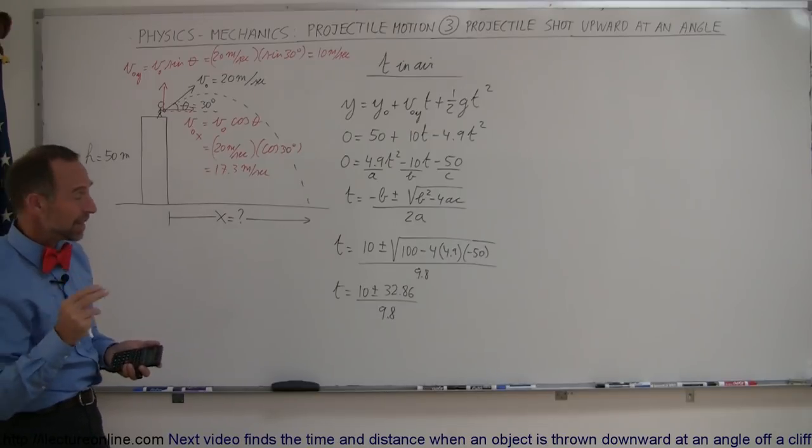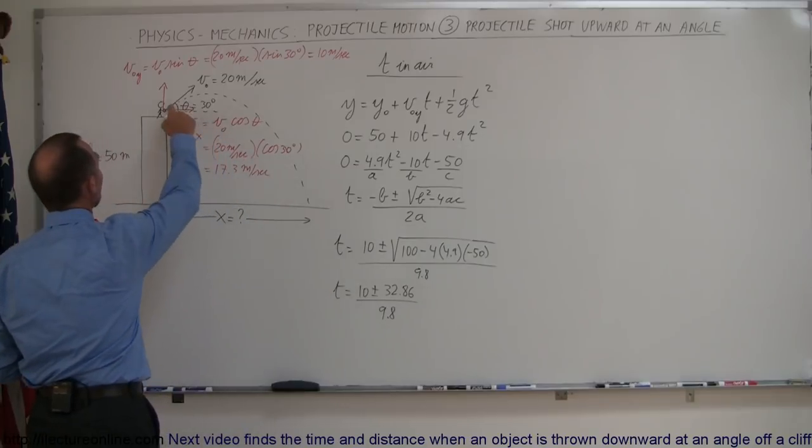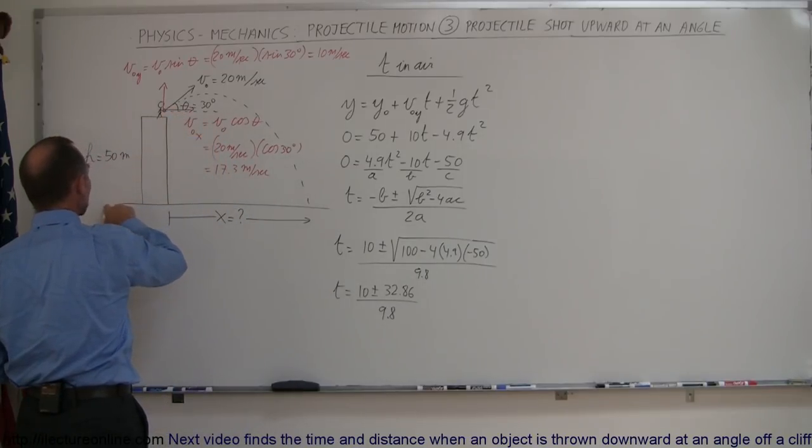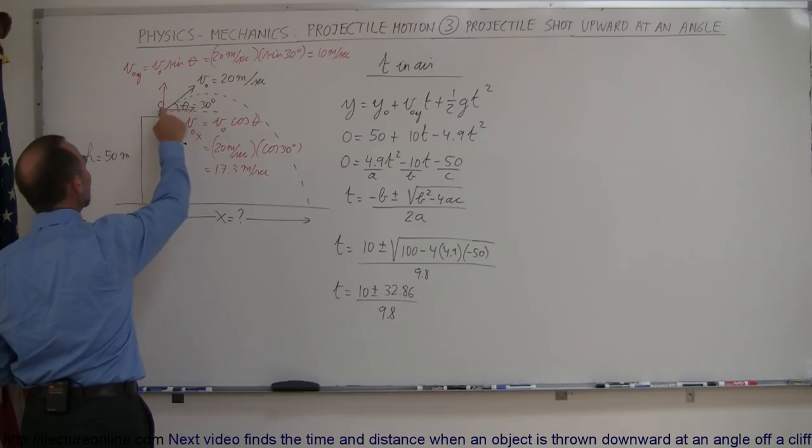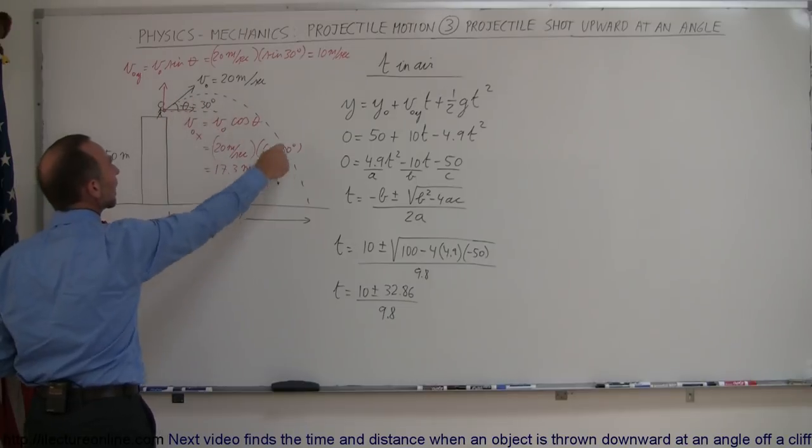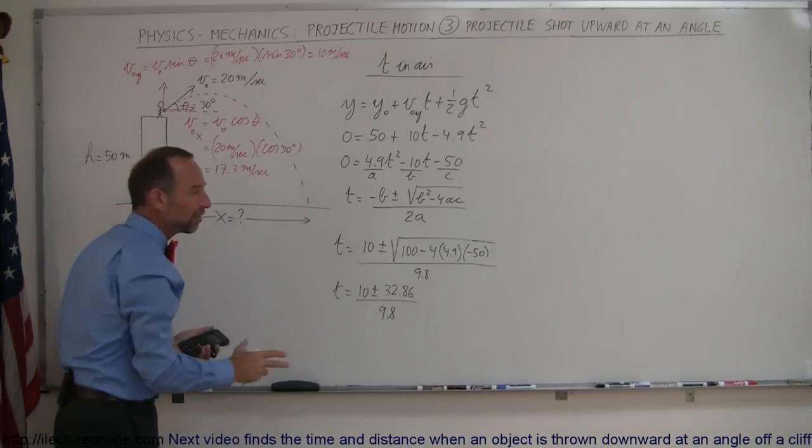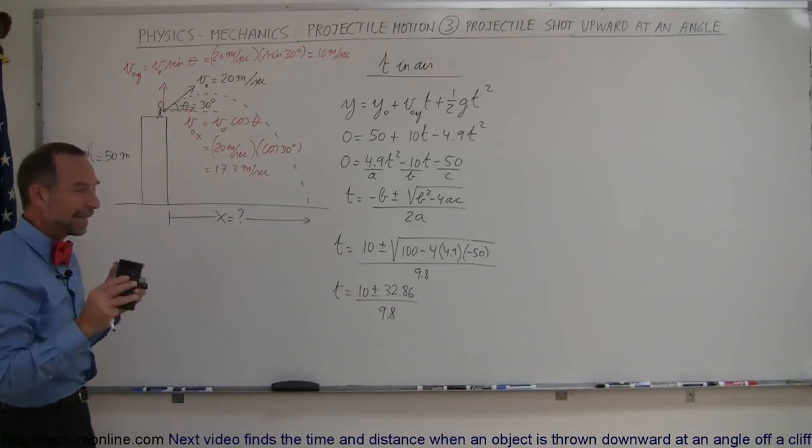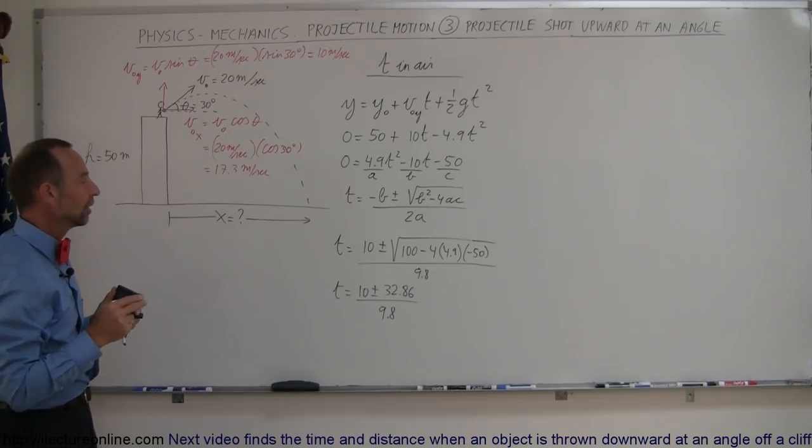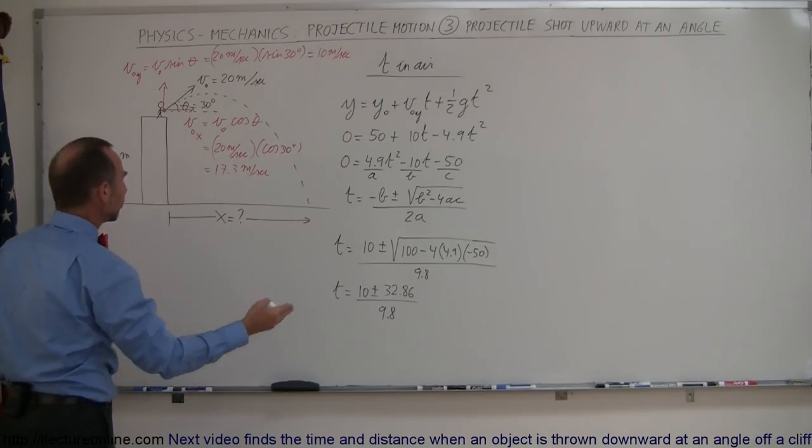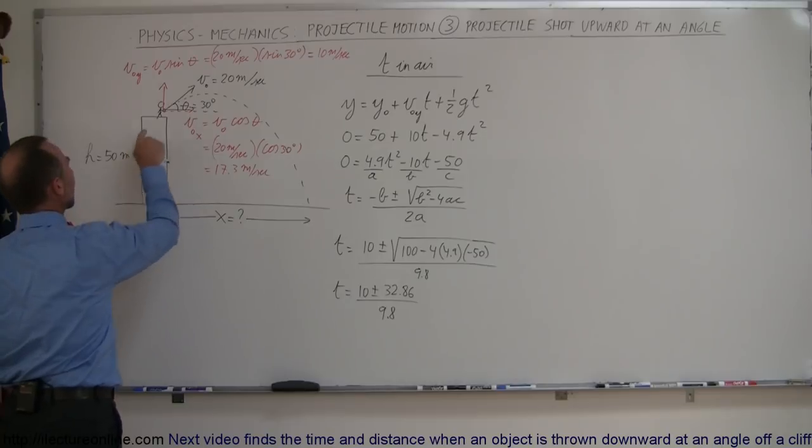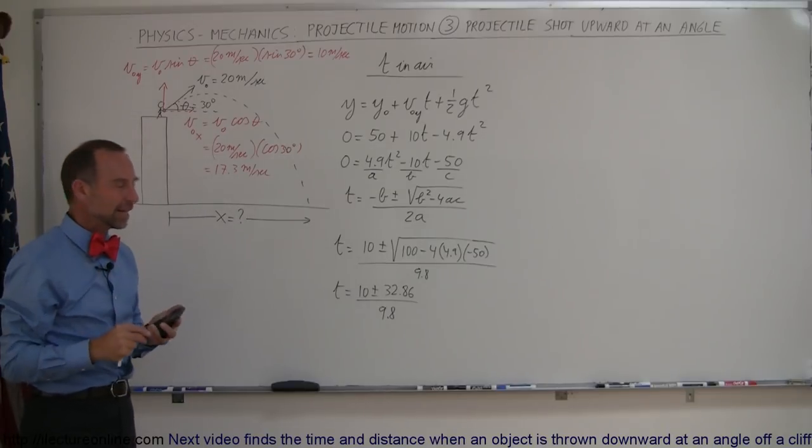But really what that means is the negative answer will assume that the object started over here from the ground, was thrown up. And after that much time we'll have, we'll hit this position with the exact velocity, height and angle. So we'll continue in that path. So even though it's not really part of the real problem, it's kind of an imaginary answer that would be used as if the problem started from down here rather from up there. So it does have some meaning in a way.